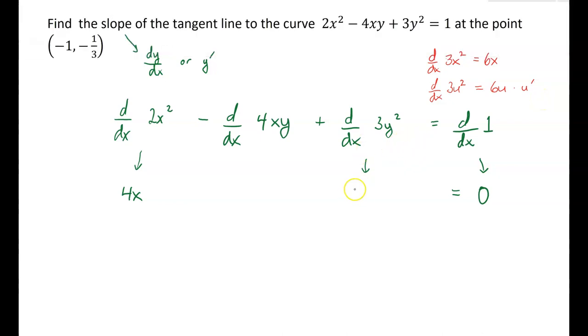So what about the derivative of 3y squared? That's going to be 6y times y prime. We have to use chain rule in this term because it's a different variable.